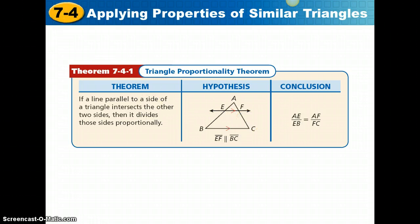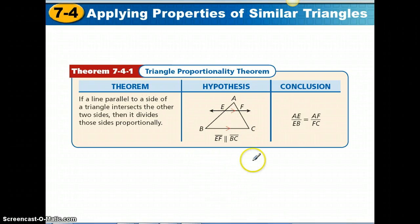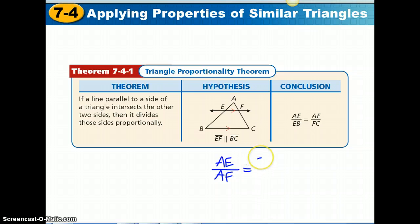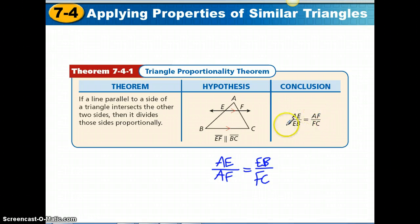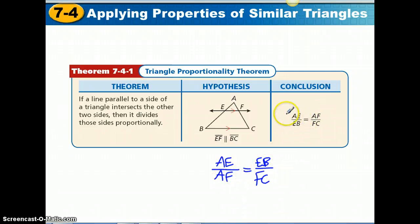This is not the only proportion we could have. We could say something also like this, that AE over AF equals EB over FC. If you remember our discussion about proportions though, all we really done between these two different proportions is exchanged the means. AF and EB change places. The cross products would still be the same.